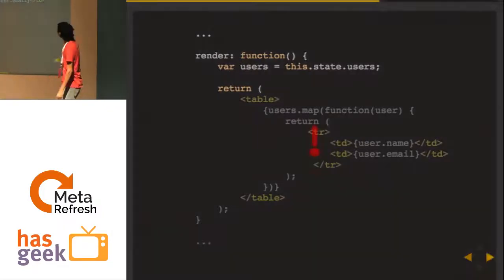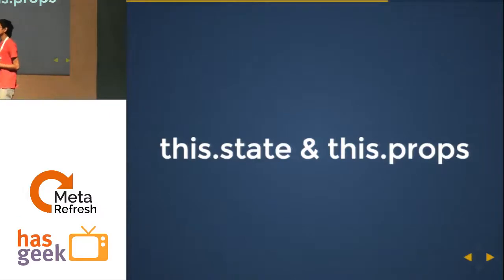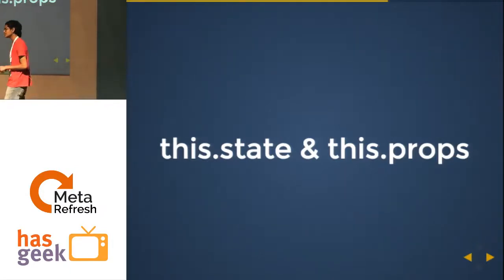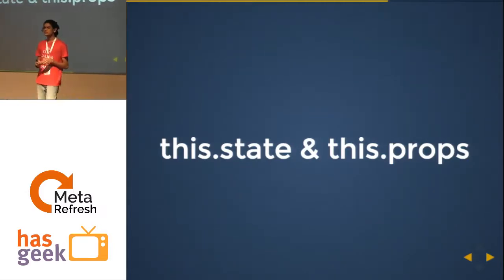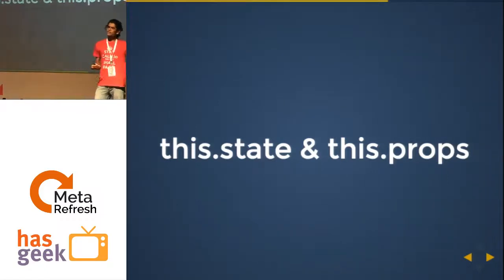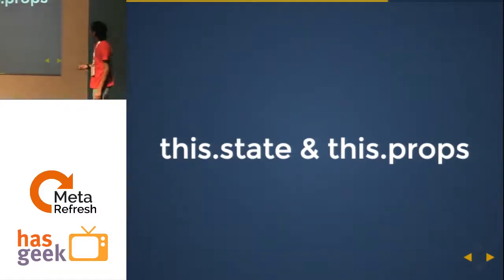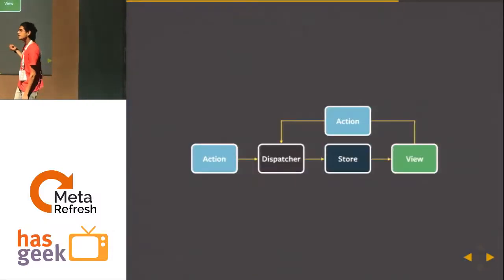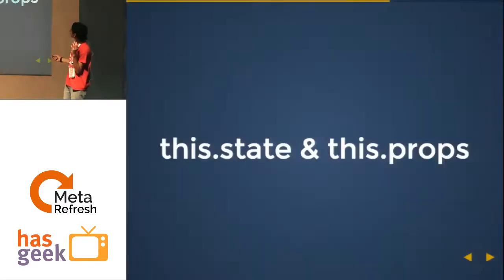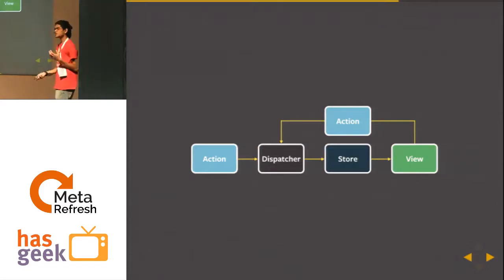But there's a catch. If I do user list store dot get all and the data is not there, this code is going to blow up because my users is not an array and I can't map over it. Every React component comes with two things: view state and view props. If a view needs to maintain its own state, it uses this.state. If a view gets properties passed from the top, it's this.props. The original diagram had only four things. Views can give actions back to the system.